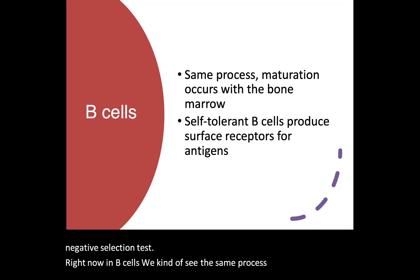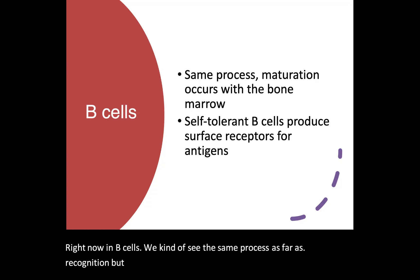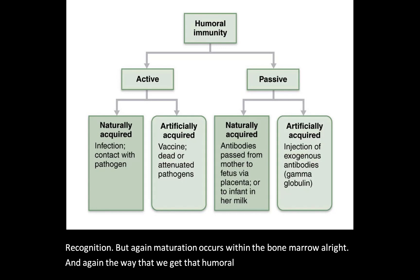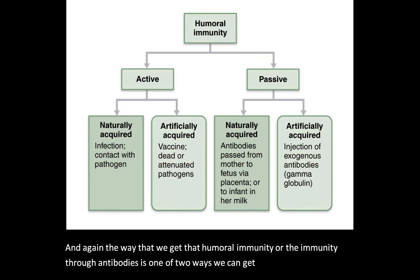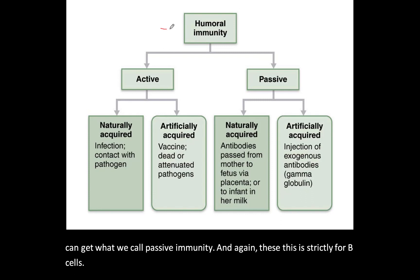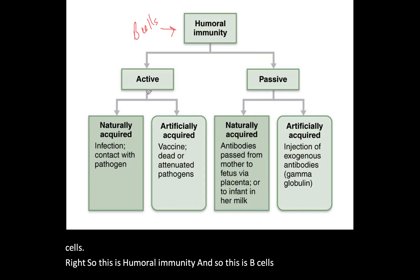In B cells we see a similar process regarding recognition, but maturation occurs within the bone marrow. The way we get humoral immunity — immunity through antibodies — is one of two ways: active immunity or passive immunity. This is strictly for B cells.